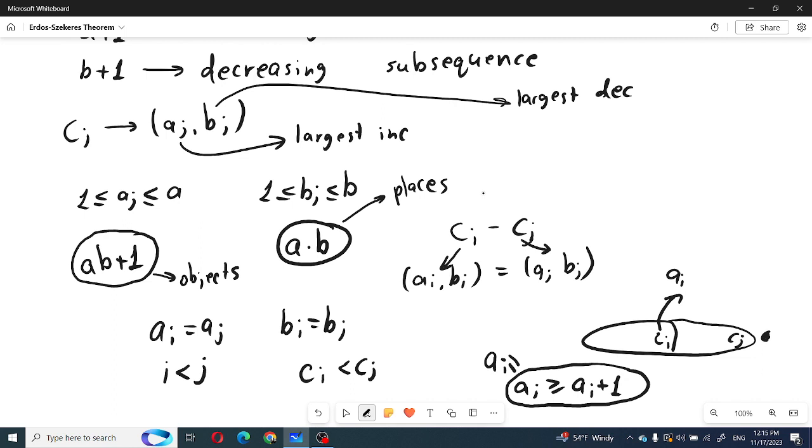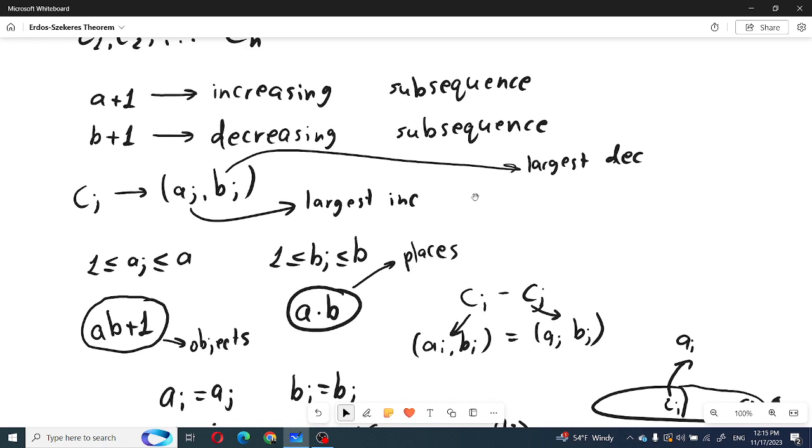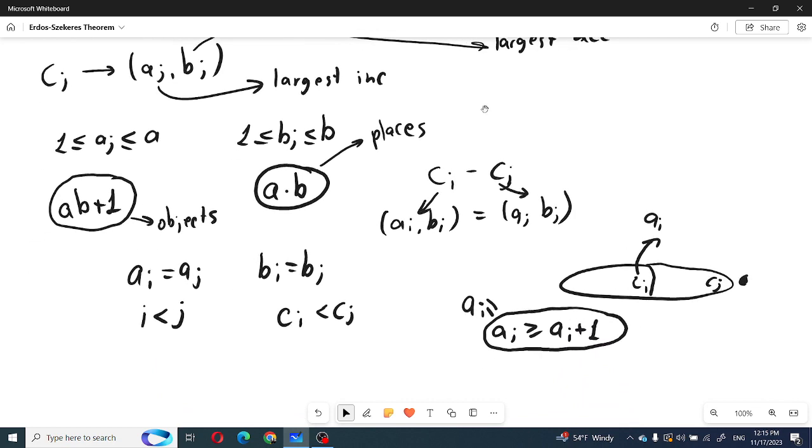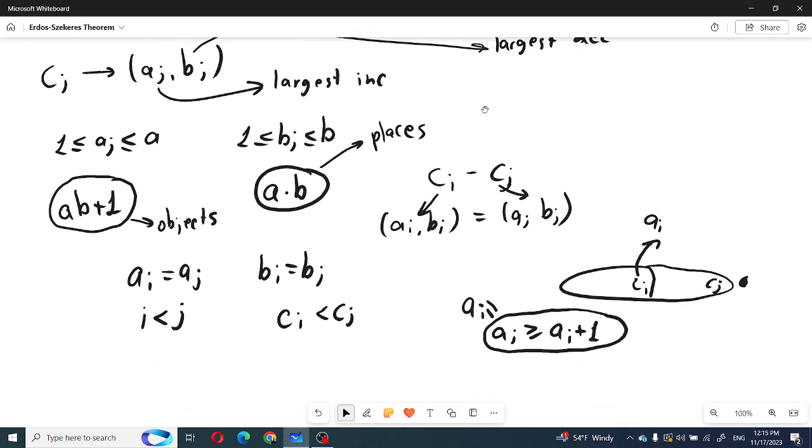So our assumption that such a sequence can exist was wrong. And now we have proved that there will always exist an increasing subsequence which will have at least b plus one elements, or a decreasing subsequence which will have at least a plus one elements.